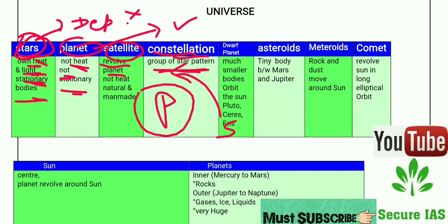Constellation means a group of stars forming any pattern. For example, several stars arranged together form a recognizable pattern — that is known as a constellation.